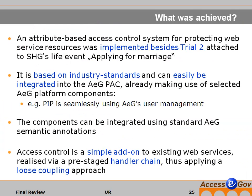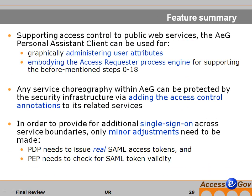What was achieved during the last year? We implemented our web service access control system, besides TRIO2, and it is based on industry standards such as XACML. The components are all integrated using the standard AccessEGIF semantic annotations. Access control is now a simple add-on to existing web services. In summary, the personal assistant client in our security infrastructure can be used for graphically administering the user attributes, and for embodying the access orchestration process engine in order to support the performance of steps 0 through 18. New service choreographies within AccessEGIF can be protected by the security infrastructure simply by adding the access control annotations as seen before. In order to provide for additional single sign-on for service boundaries, only some minor adjustments need to be made.